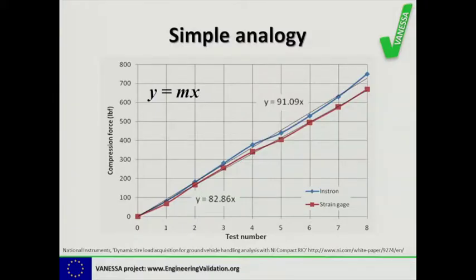Once I've fitted this regression line to the data set, I only need to know the value of m — for the strain gauge, 82.86 — to be able to reconstruct my data using solely that number and the knowledge that the line has a format y equals mx. So this is a form of simple decomposition: we no longer have to carry around all the strain gauge data, we just need to know m equals 82.86, and at any point in the future we can reconstruct the form of the calibration.